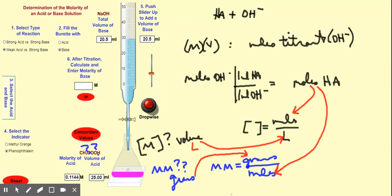You could also have the opposite setup — a strong acid in the burette and a weak base as the analyte — and you'd follow the same process. One important thing to pay attention to is writing the correct reaction so that your mole ratio is right. This is an introduction to titrations; we'll be doing a titration in class. I hope this is helpful — feel free to ask questions. Ta-ta for now.